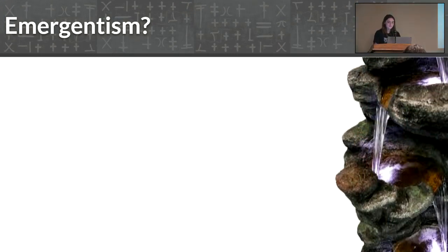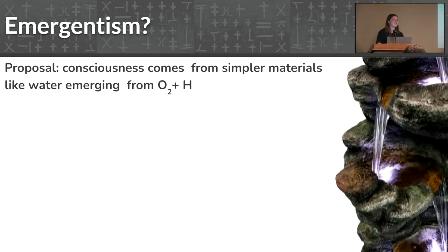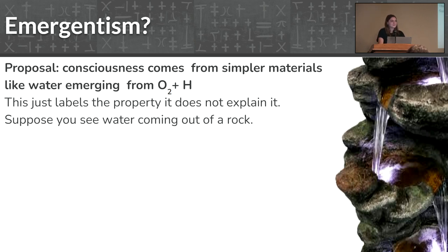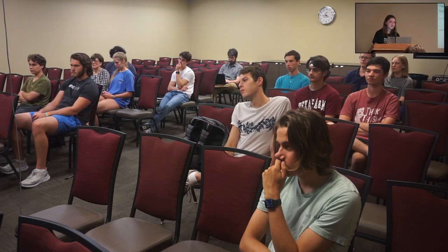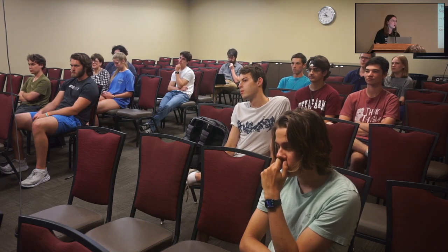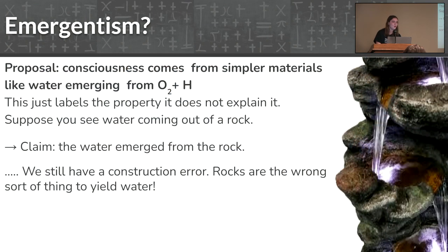Well, one of my favorites is called emergentism, which kind of goes like this. Just like you have water emerging from oxygen and hydrogen, maybe properties like consciousness can just emerge from material as you arrange it in the right configurations. And while this theory is really nice, it actually doesn't solve the problem. It just labels it. So to see why this doesn't solve the problem, I want you to imagine that you see water coming out of a rock, just spewing forth from the rock itself. And you go and you say, well, to explain this water, I'm going to say the water emerged from the rock. Have you actually solved the problem? Not really. It's still a construction error because rock is the wrong sort of thing to have water come out of it. Water just by definition doesn't come out of rocks. That's not what rock is. It's not a source of water. And in the same way, saying that somehow you can take these non-sensing, non-free will, non-private, all public access materials and just get these traits that are uniquely contrary to them, it's a bit of an issue.